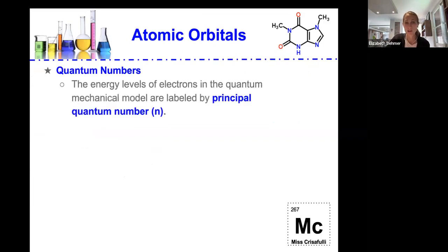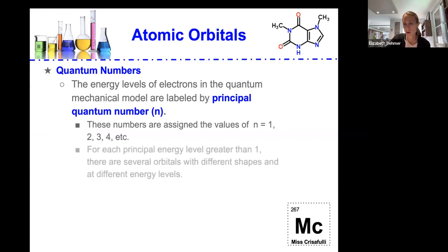So quantum numbers are energy levels of electrons in the quantum mechanical model, and they're labeled by the principal quantum number or lowercase n. And these numbers are assigned the values of n equals 1, 2, 3, 4, etc.